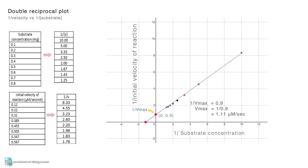The other point where the line of the graph intersects with the x-axis is negative 1 over Km. Again, Km can now be calculated. In this example, the coordinate of this point is negative 1.2 and 0. Since negative 1 over Km equals negative 1.2, Km is equal to 0.83.